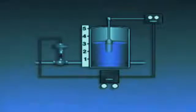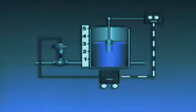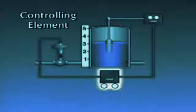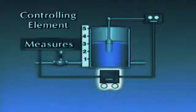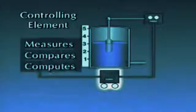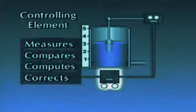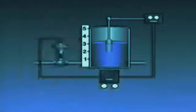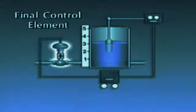The transmitter detects the position of the float and transmits a signal representing the level in the tank to the third element in the system, a controlling element. The controlling element, or controller, measures the signal from the transmitter, compares the signal to the desired level setting, computes any difference between the two values, and if necessary, produces a corrective signal. The controller sends the corrective signal to the final control element, which in this case is a control valve.